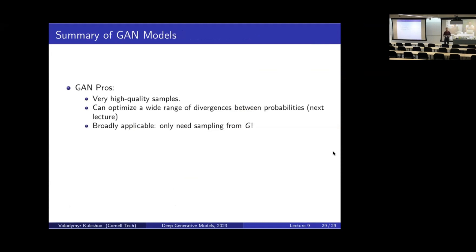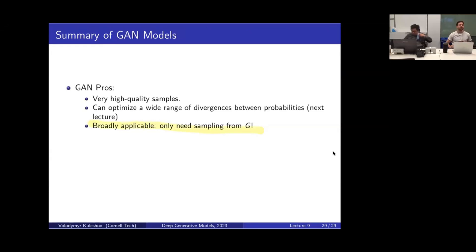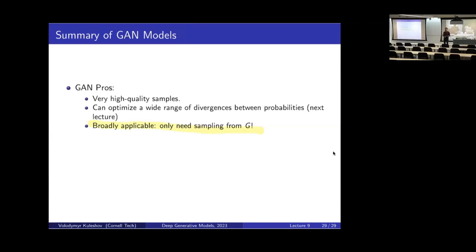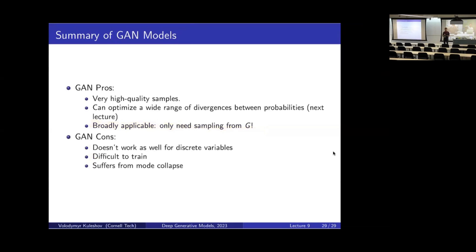Just to summarize: GANs generate very good samples and they're also very broadly applicable. Unlike normalizing flows, where we have to be very careful about which mapping between Z and X we choose, in a GAN any differentiable process from which we can sample works. That's a great advantage of GANs. The downside is that it doesn't work well for discrete variables because we can't backpropagate through the generator. It's also difficult to train because of the optimization issues described. In the next lecture, we're going to look at a few more advanced versions of GANs.